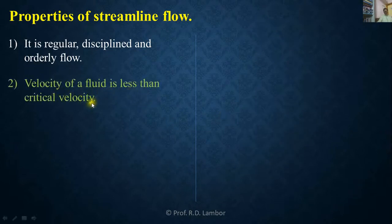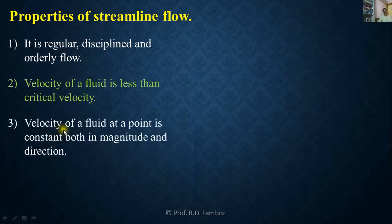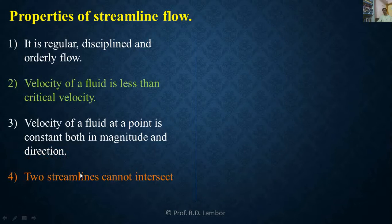Third property: in case of streamline flow, velocity of fluid at any given point is always constant, both in magnitude and direction. Fourth property: in case of laminar or streamline flow, two streamlines never intersect each other. This means fluid particles do not move from one layer to another layer, which is why two streamlines cannot intersect.